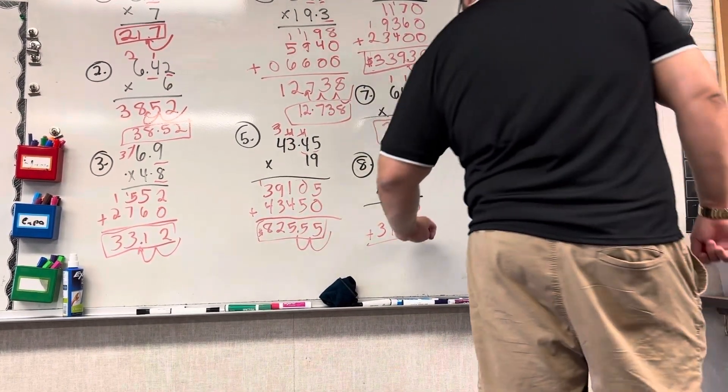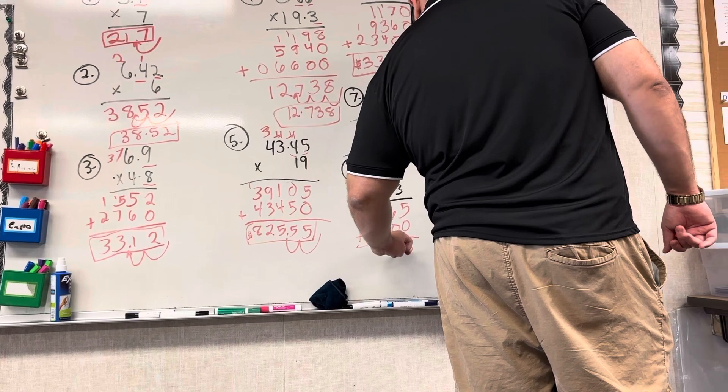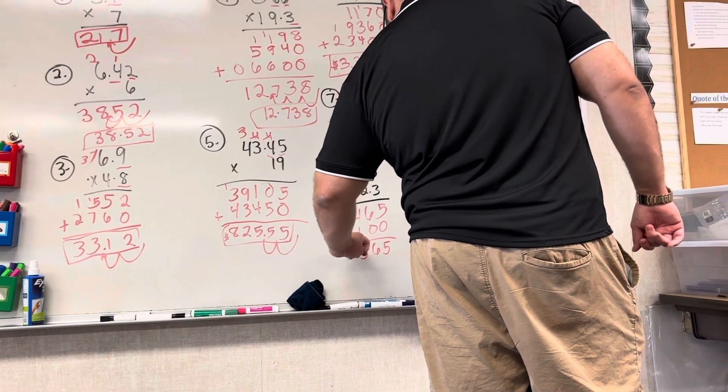Now, we add. 5 plus 0 is 5, 6 plus 0 is 6, 4 plus 1 is 5, and 3 plus 0 is 3.